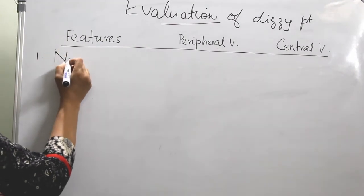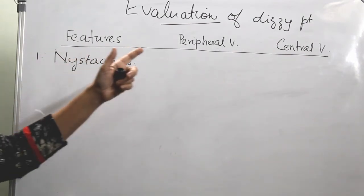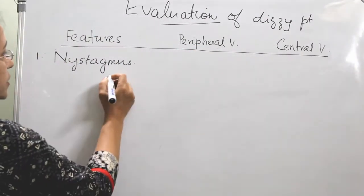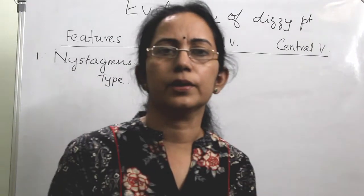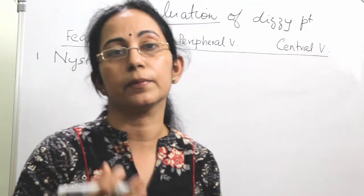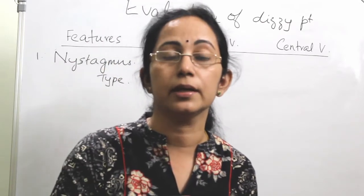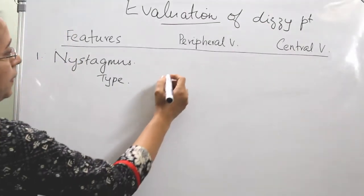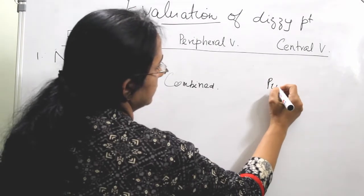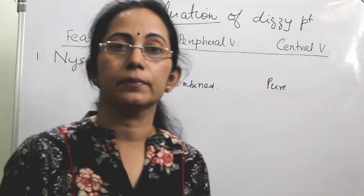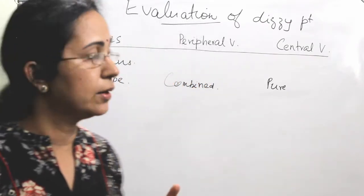The first distinguishing feature is nystagmus. Regarding the type of nystagmus: in peripheral vertigo, it can be a combined type — either horizontal or vertical. Especially in a horizontal semicircular canal disorder, it is usually a horizontal nystagmus, and in superior or posterior semicircular canal disorder, it is usually a vertical type. So combined nystagmus. But the central variety is purely one type — either vertical, horizontal, or torsional. There won't be any combination of more than one type.